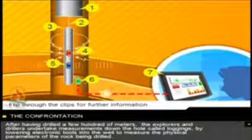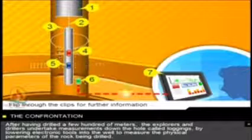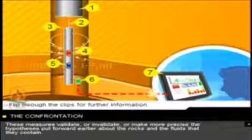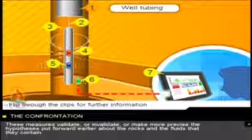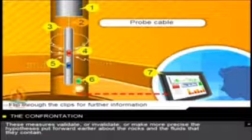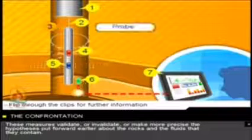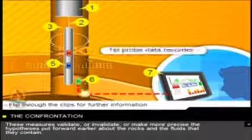If the field seems promising, the exploration team completes the first discovery well and goes on to drill a second, even several others, several hundred or thousand meters further away. In this way, the exploration team is able to refine its knowledge about the characteristics of the field.